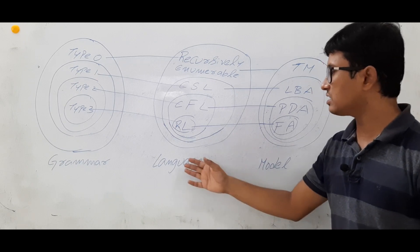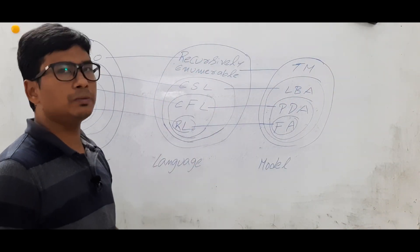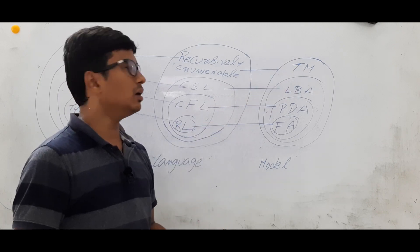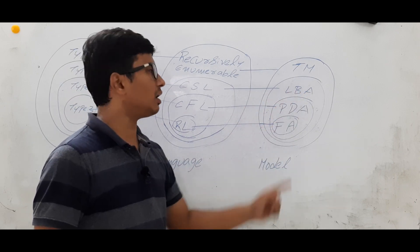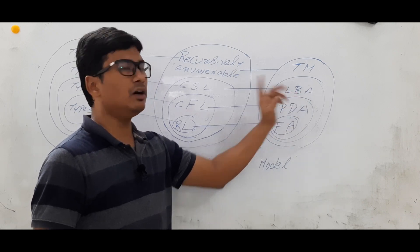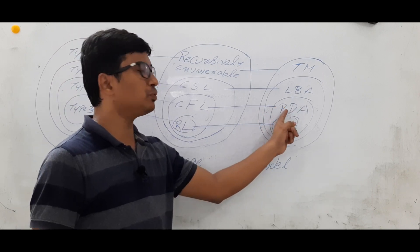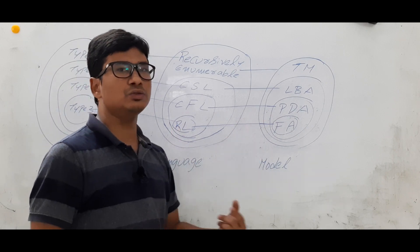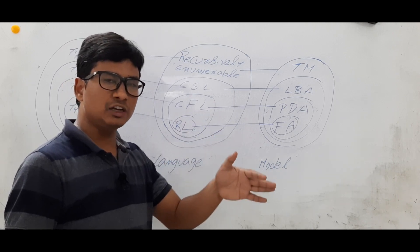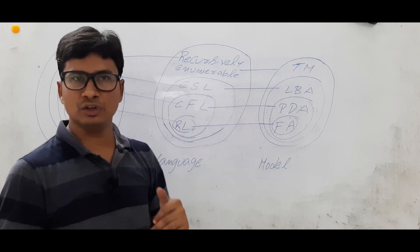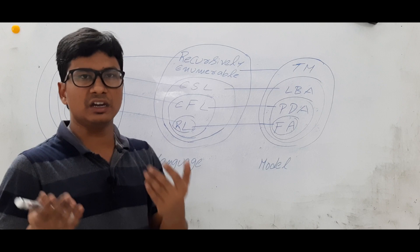Now we will discuss: for a given language, what kind of mathematical model can represent it? Recursively enumerable languages are represented using Turing machines. Context-sensitive languages are represented using linear bounded automata (LBA). Context-free languages are represented using pushdown automata (PDA). Regular languages are represented using finite automata — including DFA, NFA, epsilon-NFA, Mealy machines, and Moore machines.